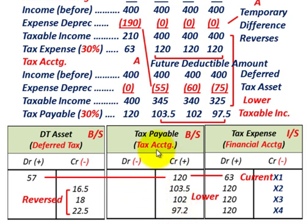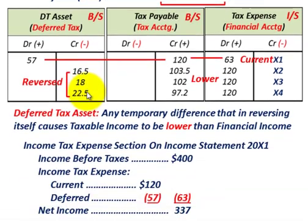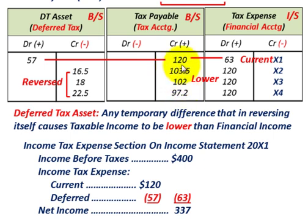We started with a $57,000 deferred tax asset debit in year one, then credited or reduced it each year by the difference between tax payable and tax expense. By the end of year four, the deferred tax asset is totally reversed and has a zero balance. So that covers the deferred tax asset setup from the expense item perspective. Now let's look at how we record the income statement presentation.